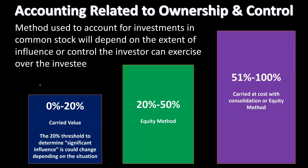Typically, we're going to draw those lines with the amount of ownership, though there might be exceptions in certain cases. We're going to define three ranges: 0% to 20%, 20% to 50%, and 51% to 100%. Let's start with 0% to 20%, which is more like a normal investor.